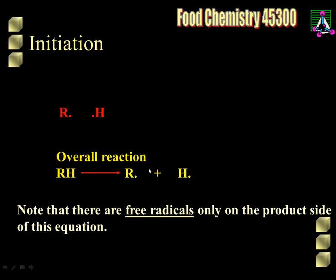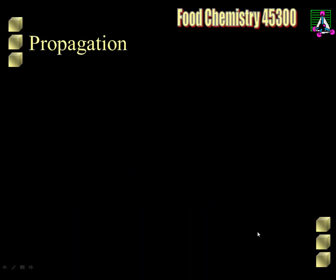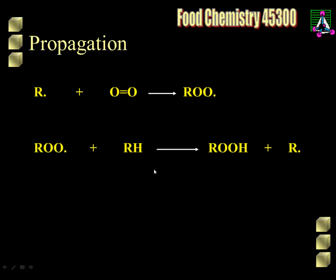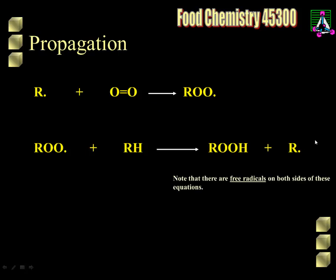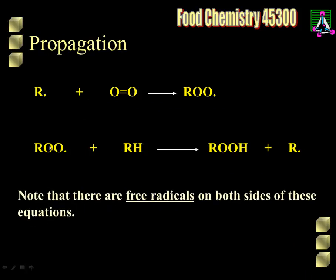In the propagation steps there are really two: R dot reacting with oxygen to produce ROO dot, and then ROO dot reacting with an original molecule of fat to produce the hydro peroxide and another R dot. This two-reaction set involves both R dot and ROO dot. Both of those are important places where phenolic antioxidants can have an effect. In propagation reactions, there are free radicals on both sides of the equations — that's why it keeps going, that's why it propagates.